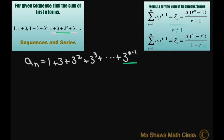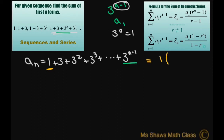You have to use 3 to the power of n minus 1 because our first term is 1. So if you substitute 1 into 3 to the power of n minus 1, you get 3 to the power of 0, which equals 1. If the first term were 3, we would just use 3 to the power of n. Condensing this, it equals 1 times the quantity 3 to the power of n minus 1, with common ratio 3, divided by 3 minus 1.